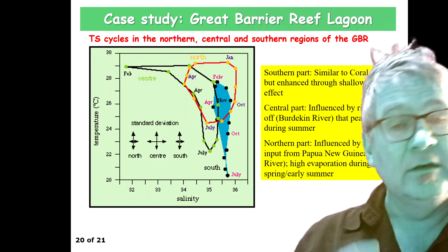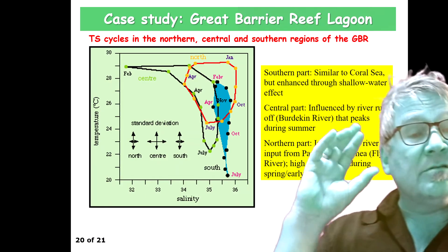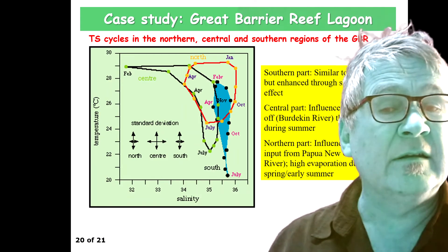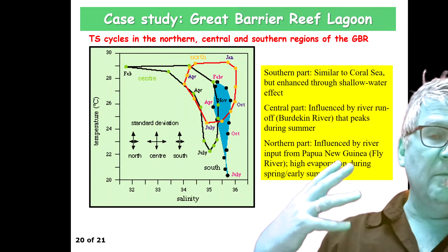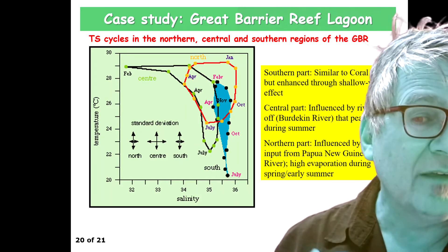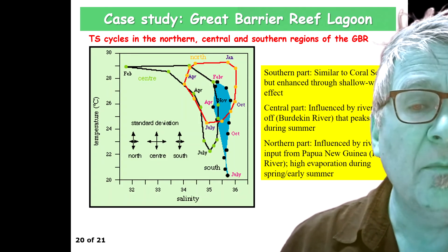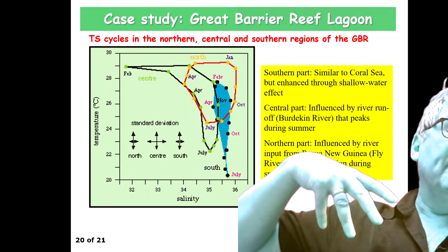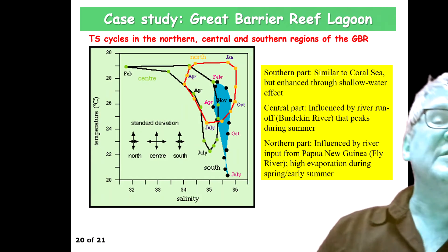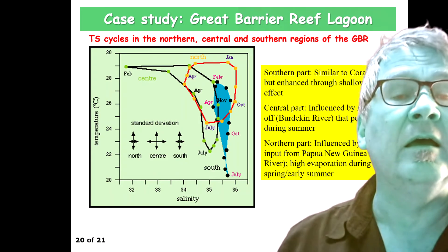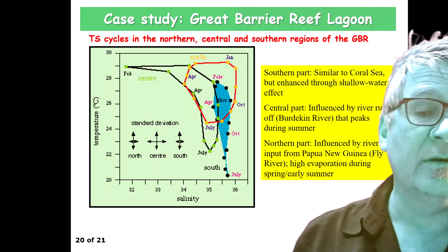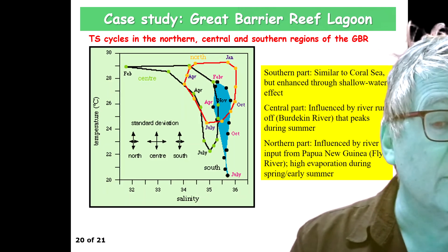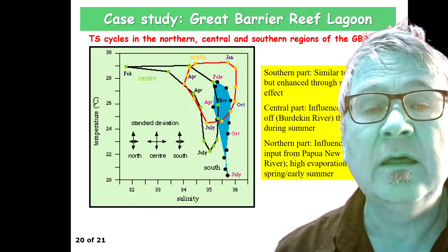So you actually get different sub-regions in the Great Barrier Reef. Surprisingly, you get very similar temperatures in most parts, essentially due to atmospheric heating but also the influence of the East Australian Current. However, you get quite different responses in terms of salinity.